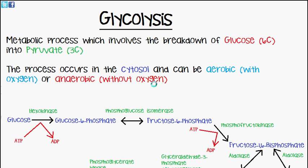Today's video will be discussing glycolysis. There are two types: aerobic, which requires oxygen, and anaerobic. This video focuses on aerobic glycolysis; the following video will cover anaerobic. Glycolysis is the metabolic process involving the breakdown of glucose, a 6-carbon monosaccharide, into pyruvate, a 3-carbon monosaccharide. The process occurs in the cytosol of the cytoplasm — not the mitochondria — and can be aerobic or anaerobic.